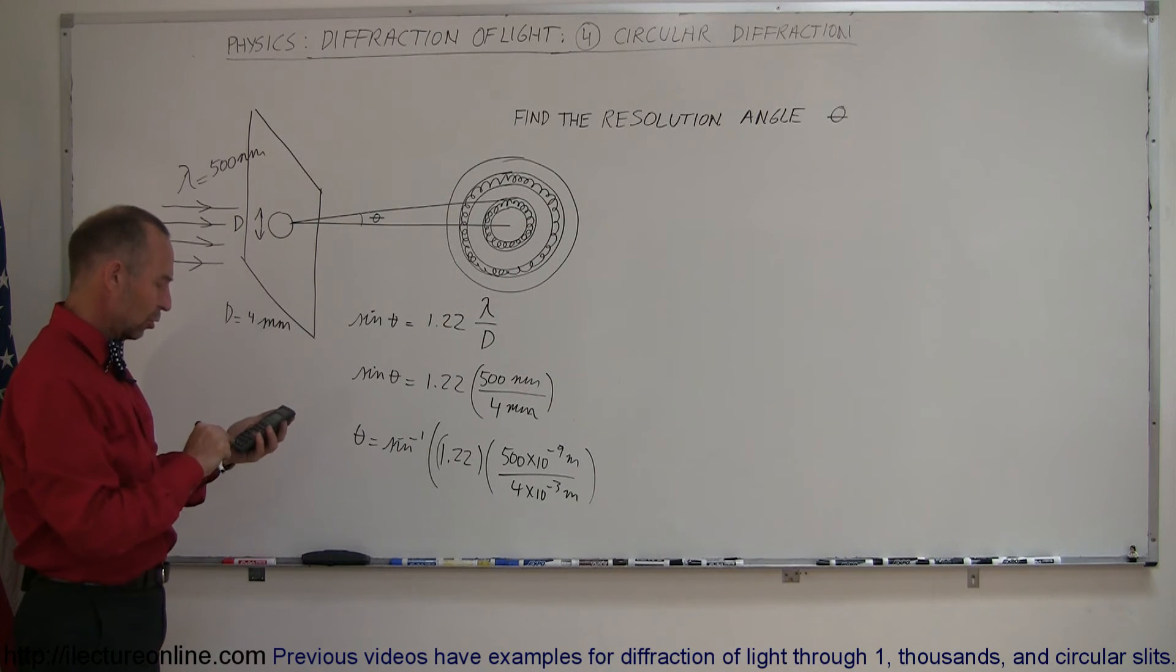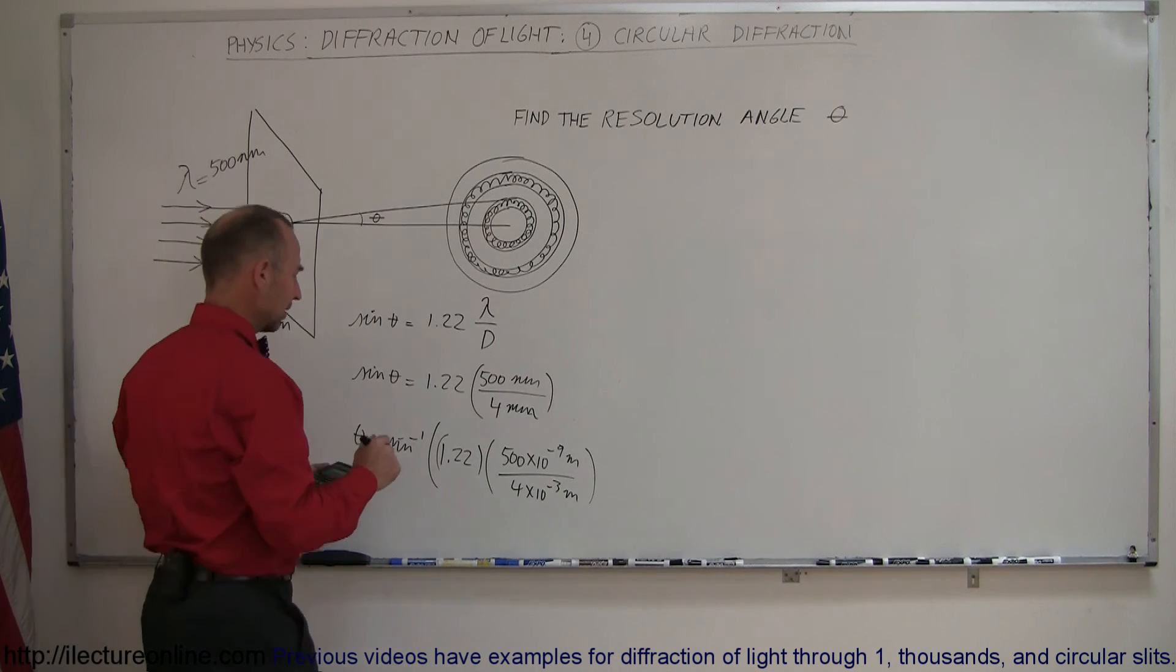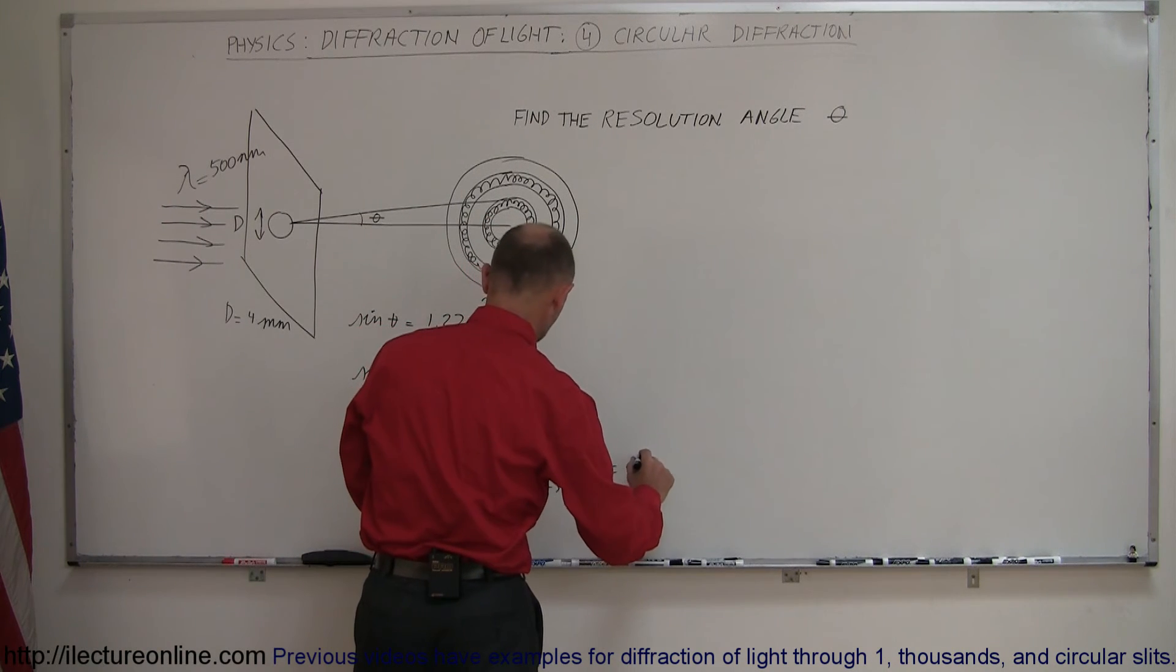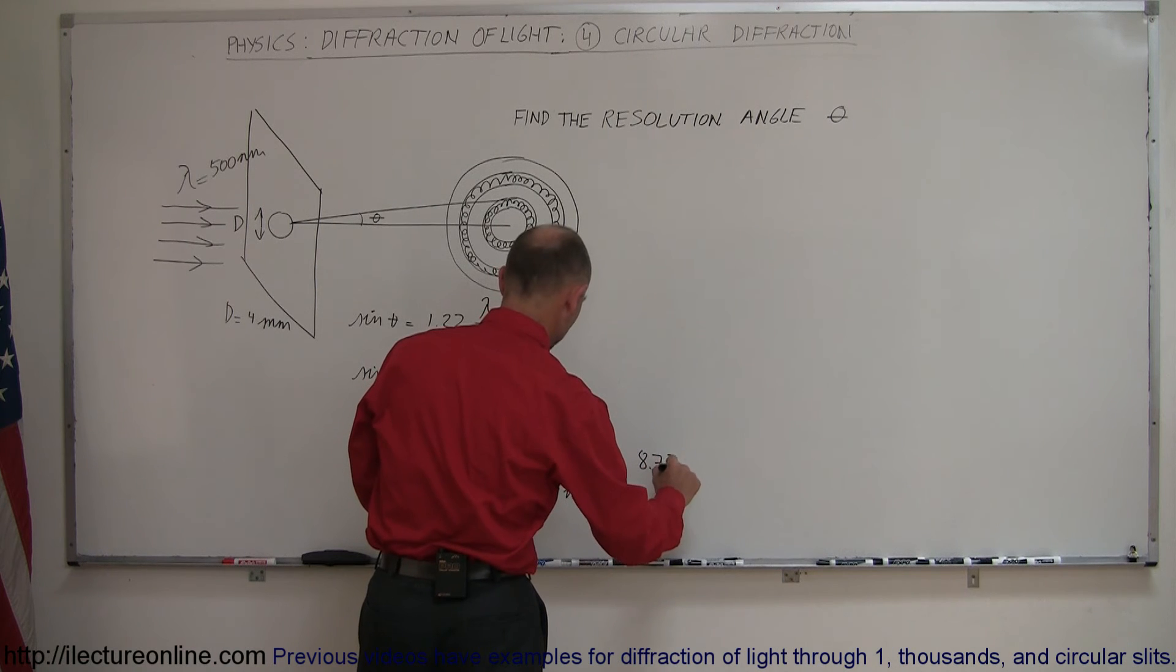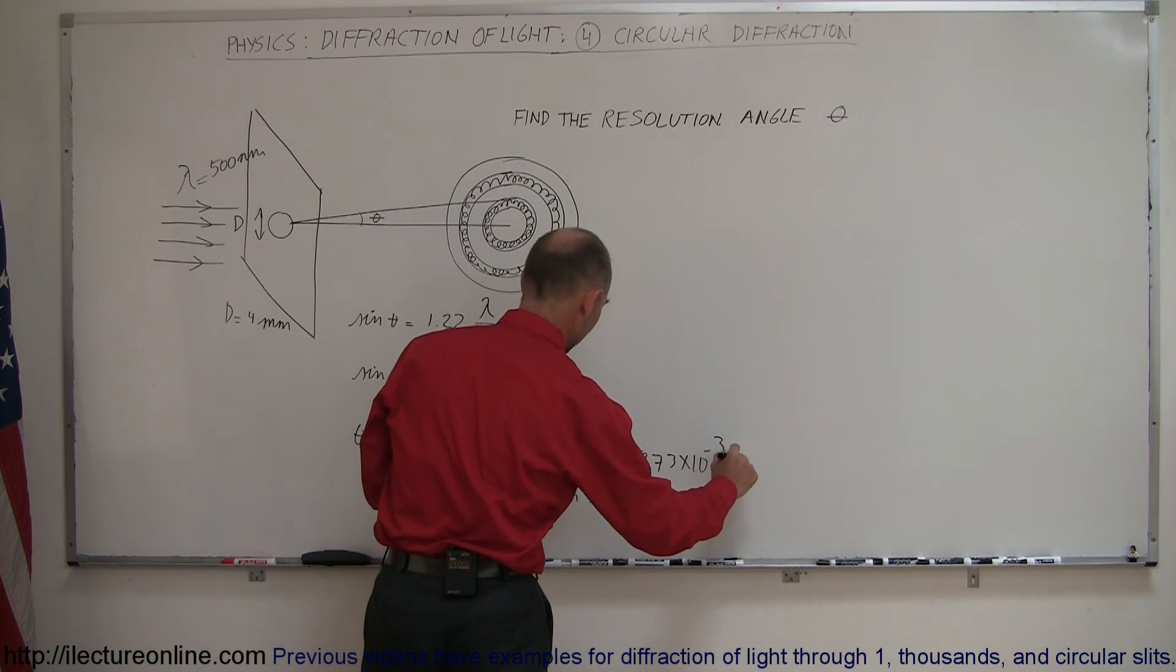Multiply that times 1.22, and then we take the arc sine of that. You can see here that the angle of resolution is 8.73 times 10 to the minus 3 degrees.